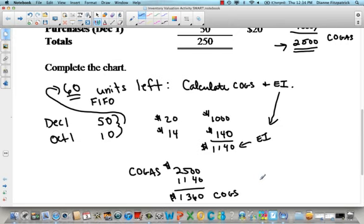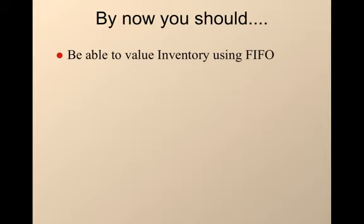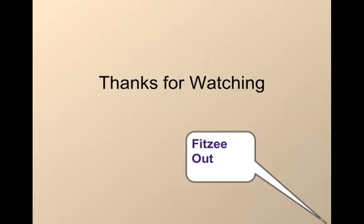Remember when doing these types of calculations, usually we're asked to figure out what our cost of goods sold is and what our ending inventory is. In this particular case, our cost of goods sold is $1,360 and our ending inventory is $1,140. That was our little demonstration of the FIFO method. By now you should be able to value inventory using the FIFO method, first in, first out. You should be able to calculate inventory and cost of goods sold using that method. Thanks for watching. Hope this helped.